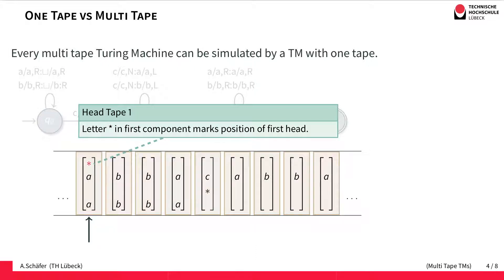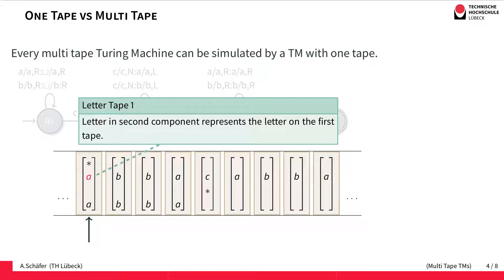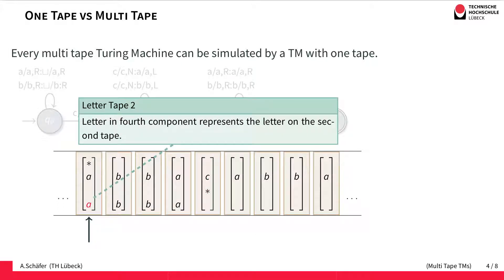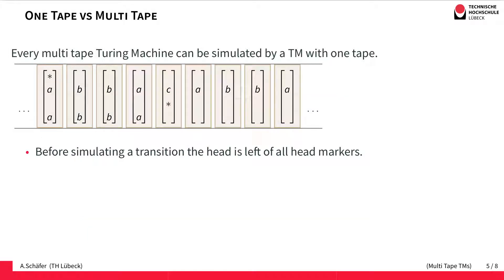The first entry is the marking indicating the head position for the first tape of our two-tape Turing machine. The second entry is the letter on the first tape. The third entry is the marking for the position of the second head. And finally the fourth component represents the letter on the second tape. Now we can simulate the behavior of our multi-tape Turing machine with only one tape by proceeding as follows.